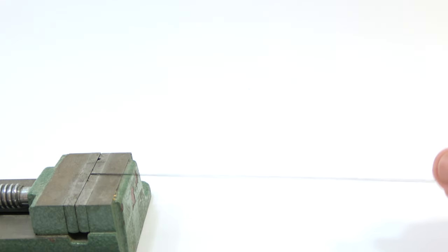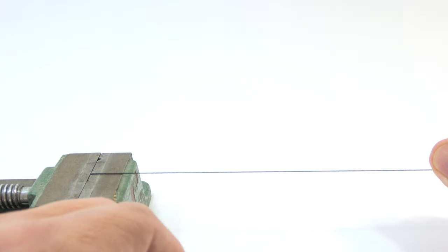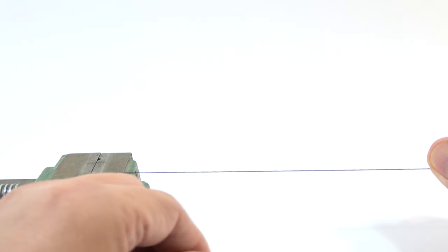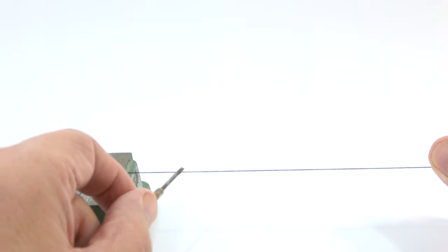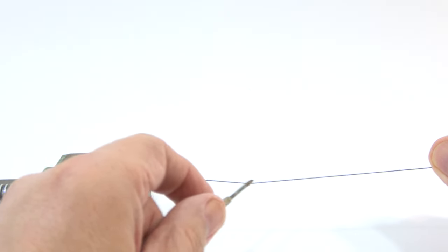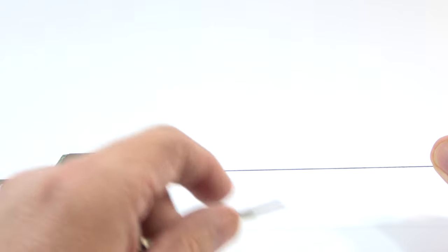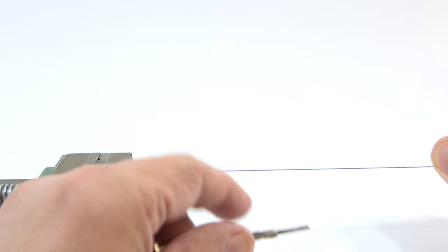One trick with thread if you really want to use it is to pull it tight and then stiffen the thread up with a little bit of super glue. I'll put it on a bit of plastic here, just run the super glue backwards and forwards along the thread and really soak it in.